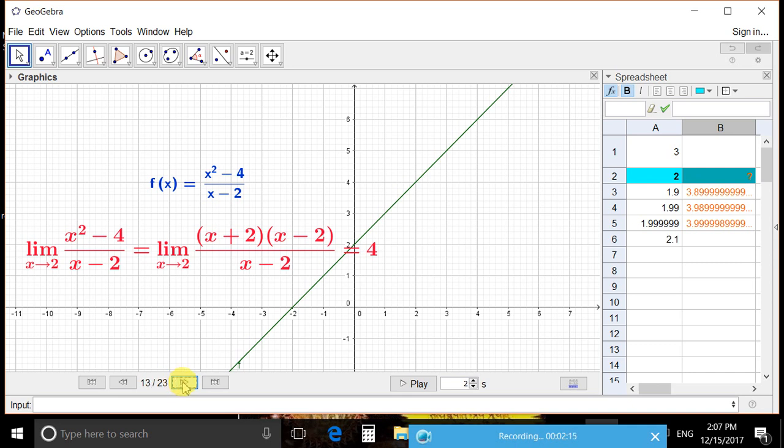Let us see the other way. That is, when x is approaching from 2 point something to 2, it is from the other side of the limit. At 2.1, it will be 4 point something. At 2.01, it will be 4.01 something.